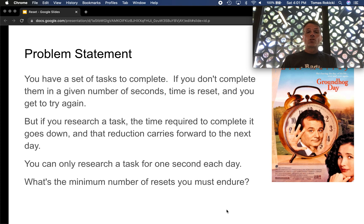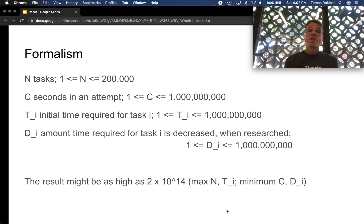You can only research a task once, one second each day. So this question asks, what's the minimum number of resets you must endure in order to complete all the tasks? We have n tasks up to 200,000. Each attempt is C seconds, which is up to a billion. T_i, which is the time required for each task, initially is between one and a billion.